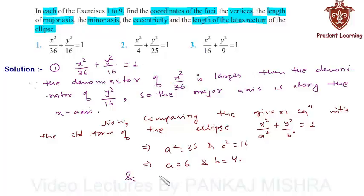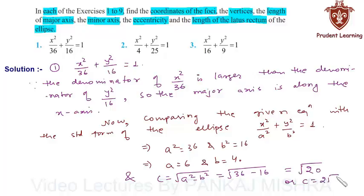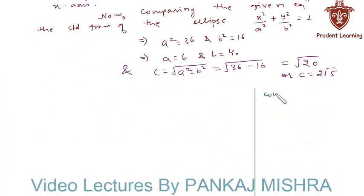With the help of a and b we can easily find the value of c. We have c = √(a² − b²) = √(36 − 16) = √20 = 2√5.